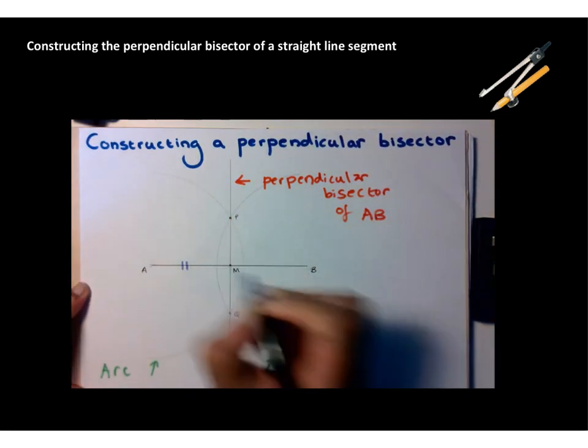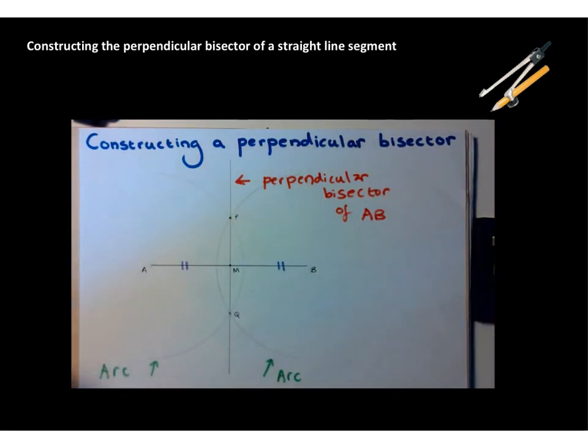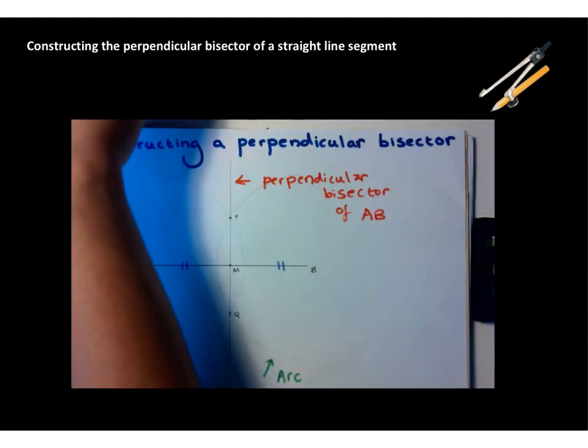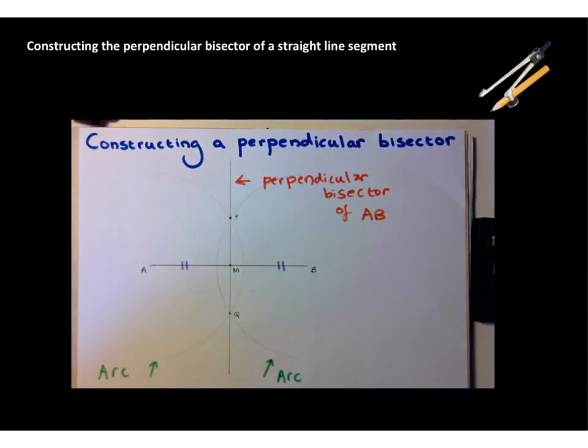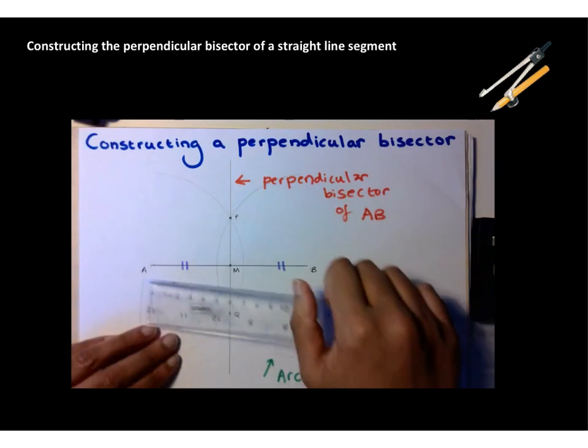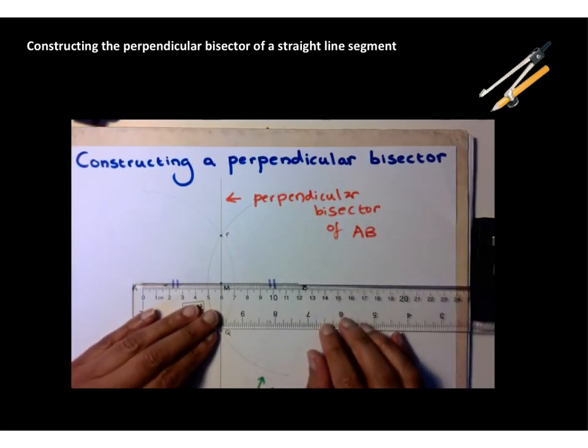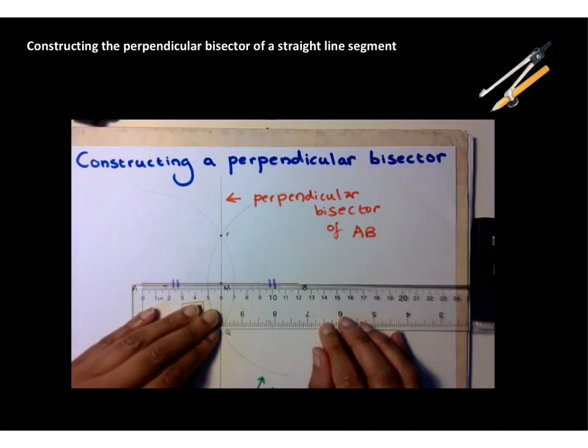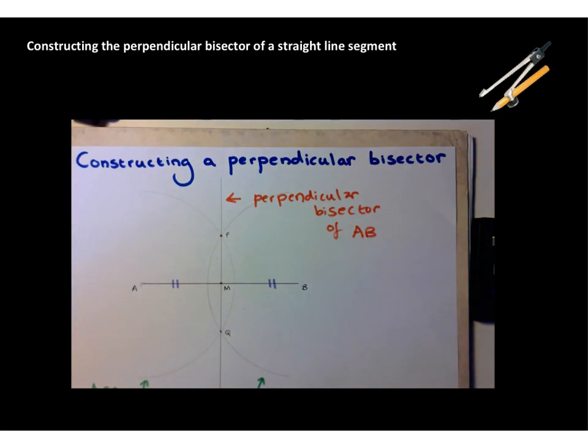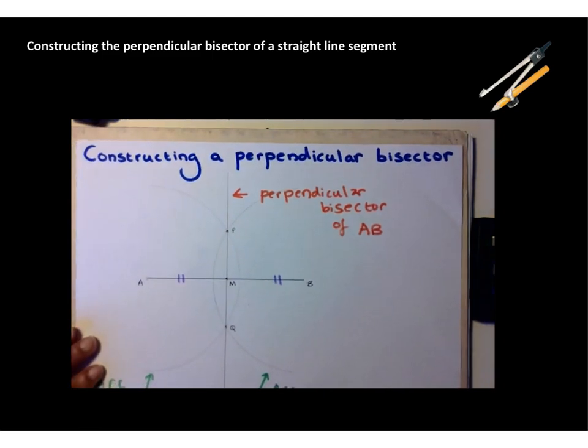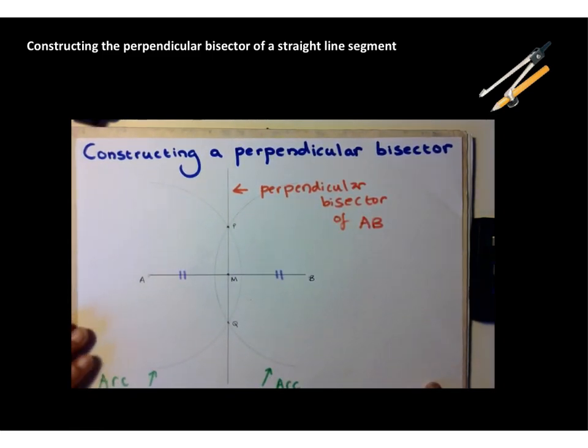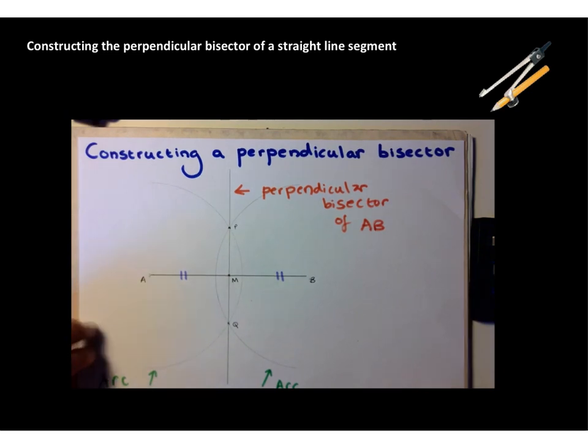If I measure the distance from A to M, you can see that's six centimeters, so it's halfway along. You might find that you are slightly out when you do this, and it depends on how careful you've been with your accurate construction.